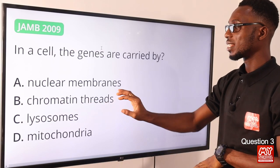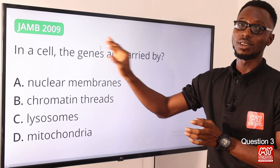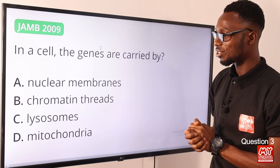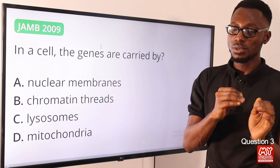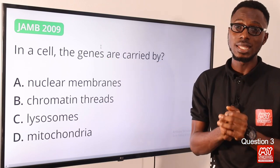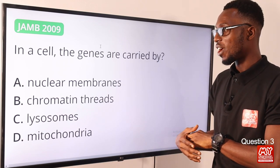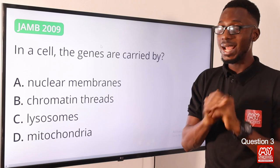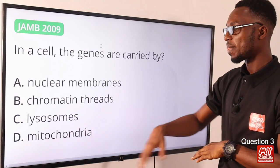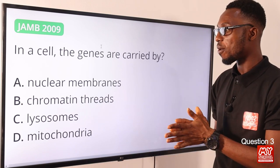Question three: in a cell, genes are carried by the chromatin threads. These are the extended form of the chromosome. The nucleus contains the chromosome, and the chromosome contains the genes — also referred to as DNA — where genetic information is stored. The lysosome is the site for respiratory enzymes; the mitochondria is the powerhouse of the cell. The correct option is option B, chromatin threads.